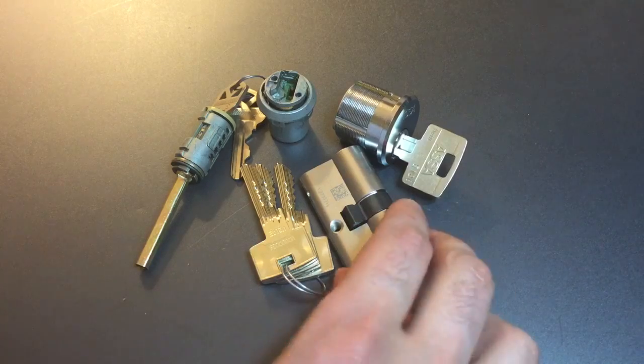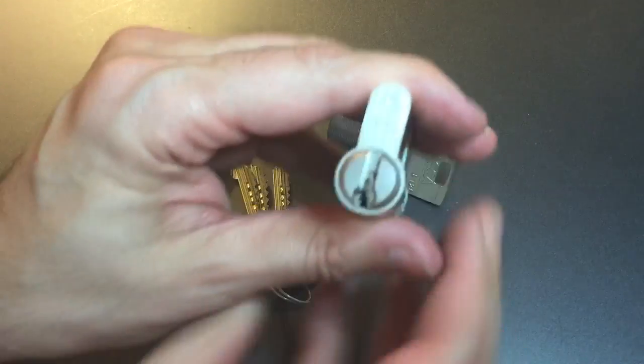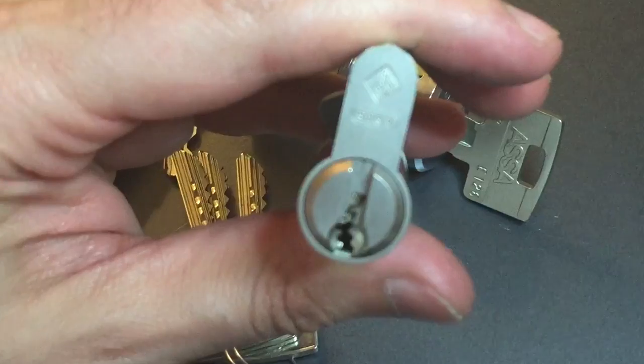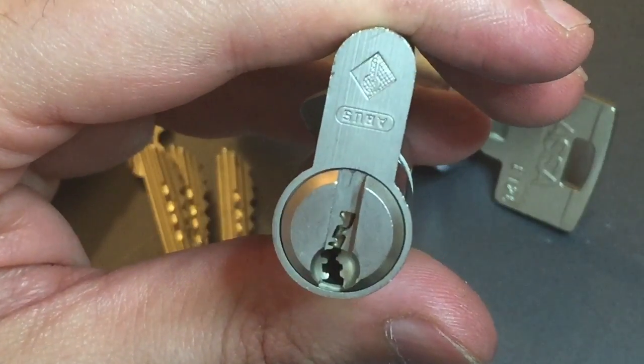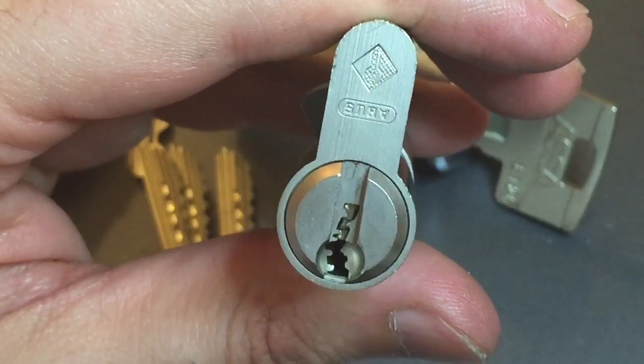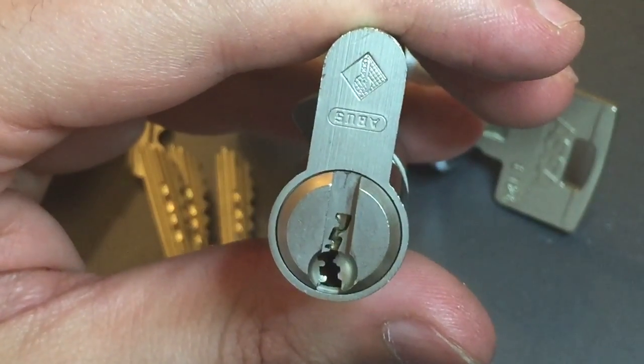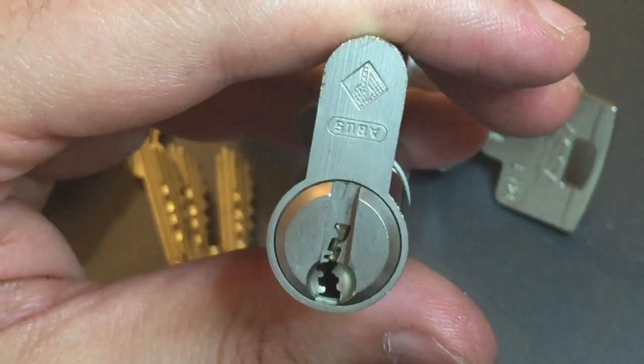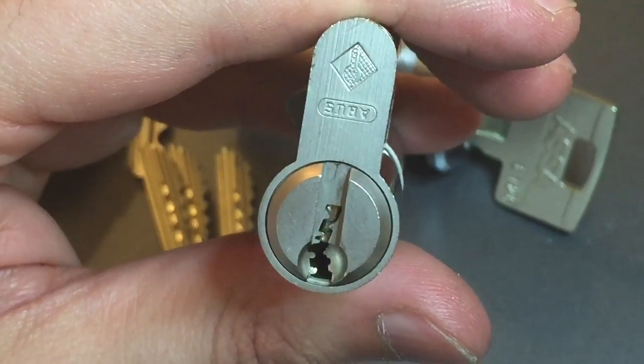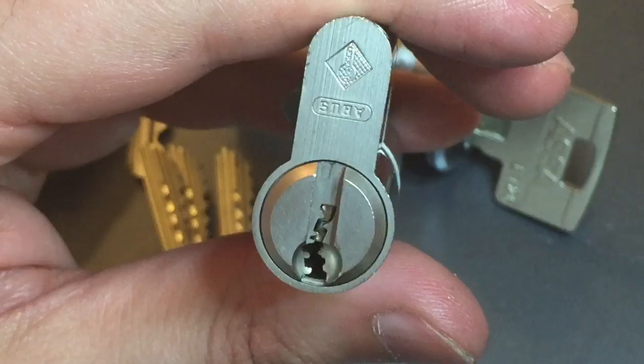And then finally, a really nice little Euro Profile Cylinder. It's an Abus Pfaffenhain lock that has an absolutely ridiculous curved keyway with lots of little bits of warding. Abus advertises this as a pretty strong anti-drill, I'm sorry,